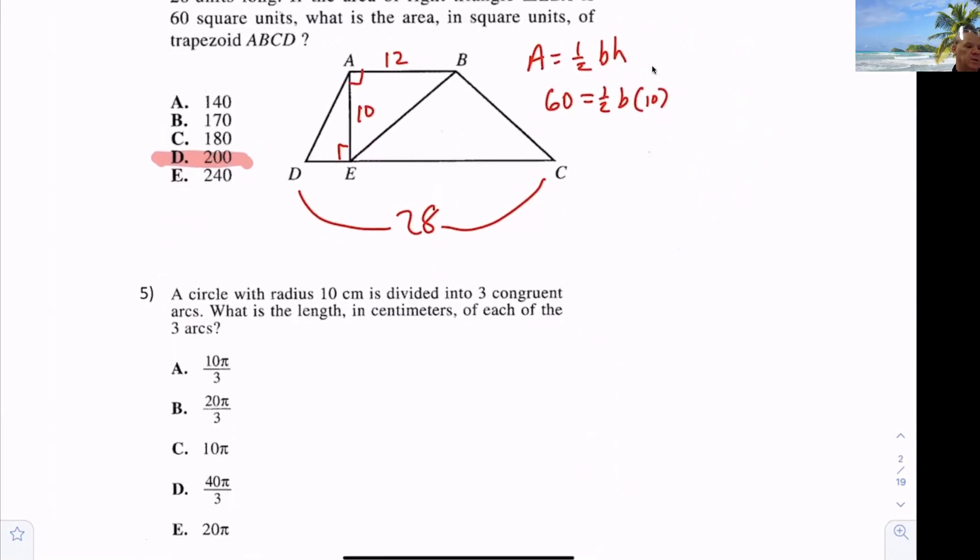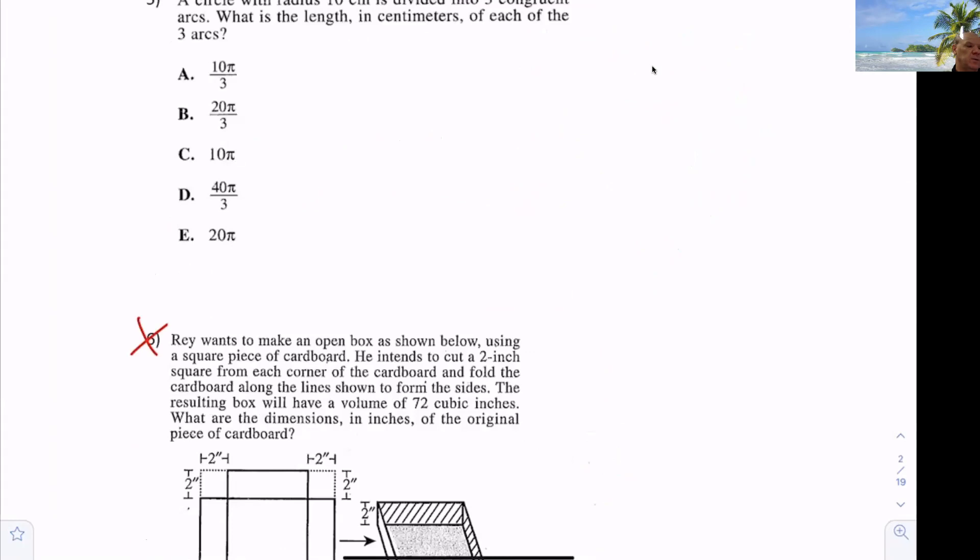We did four, correct? Yeah. Number five. So far, I got an A and a B, so it looks like we need to talk about it. So if the radius is 10, the circumference would be what? 20 pi, right? And if it's divided into three congruent arcs, just divided by three. Everybody happy with that?